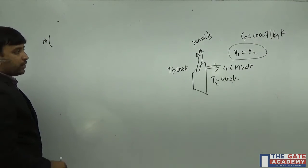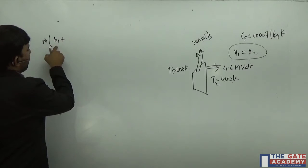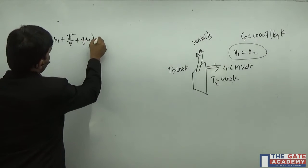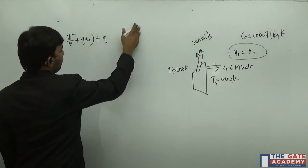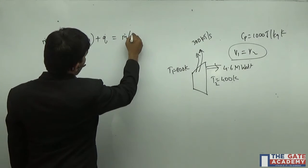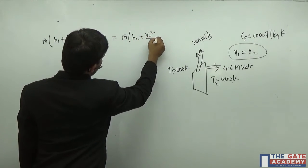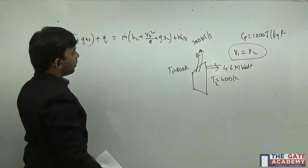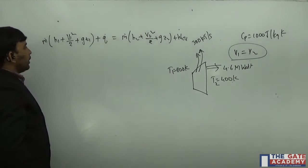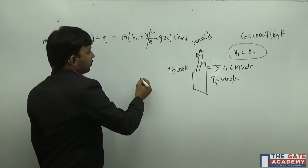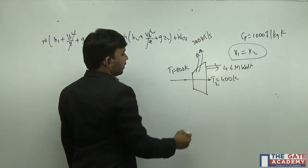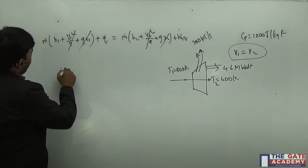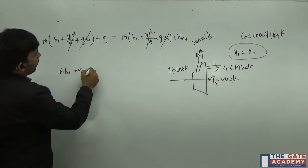In the SFEE, m_dot is the mass flow rate. h1 is the enthalpy at the inlet, plus kinetic energy and potential energy of the fluid, plus heat supplied to the control volume. This equals m_dot times h2 plus V2²/2 plus gz2 plus work done by the control volume.